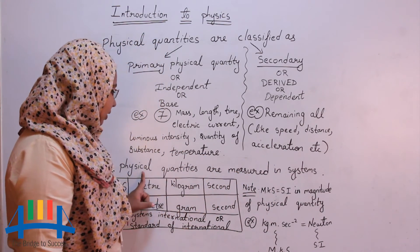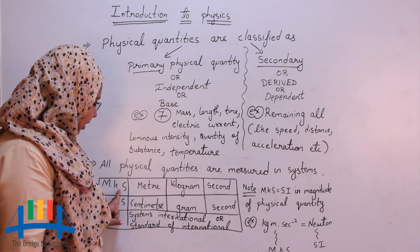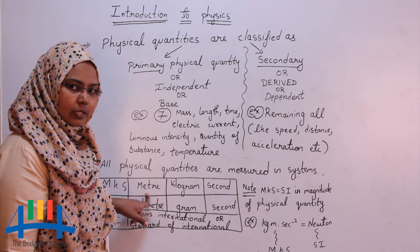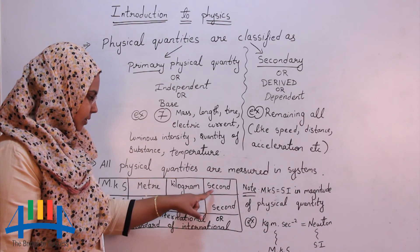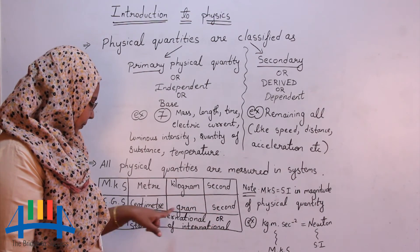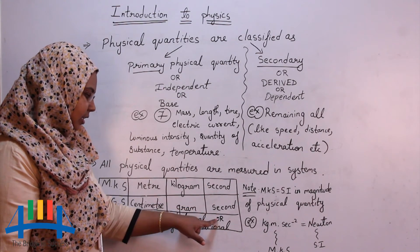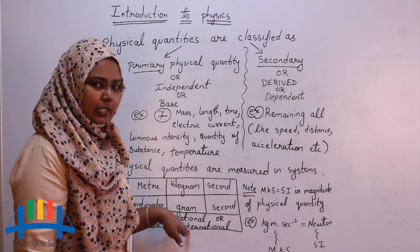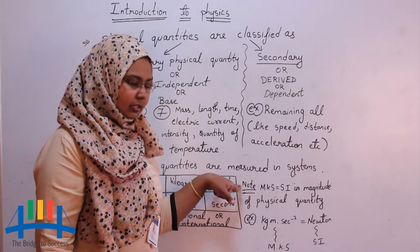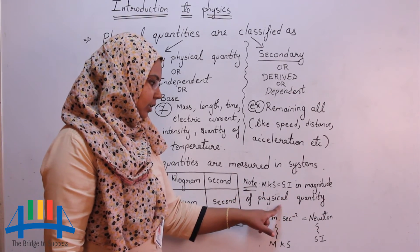All physical quantities are measured in systems. There are 3 systems: MKS, CGS and SI. MKS system is called as meter, kilogram, second. CGS will form as centimeter, gram, second. And SI is systems international or you can say standard of international which is globally accepted. You have to keep one thing in mind that is MKS is equals to SI in magnitude of physical quantity.